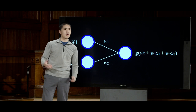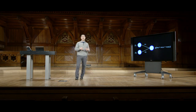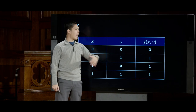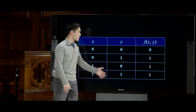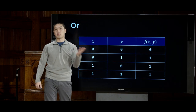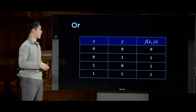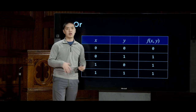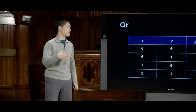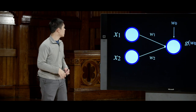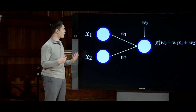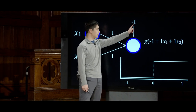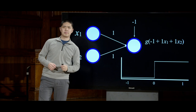A simple example: the OR function takes two inputs x and y, outputting 1 if either input is 1, and 0 only if both inputs are 0. To model OR, we use a weight of 1 for each input, a bias of negative 1, and the step function. For input 0 OR 0: 0·1 + 0·1 + (−1) = −1, which is before the threshold, so output is 0. That's correct since false OR false is false.